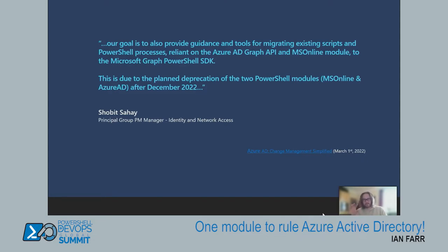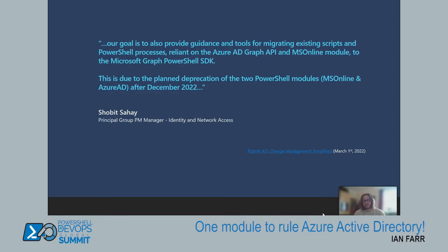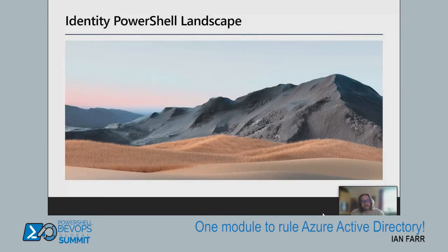To clarify terminology: 'deprecated' means no new functionality being developed but still supported, whereas 'retired' means the removal of a feature or service — it stops working at a given point. For these modules being flagged for deprecation, the announcement means customers and the community have considerably more time to upgrade to Graph PowerShell, and we have more time to work on facilitating that migration process.